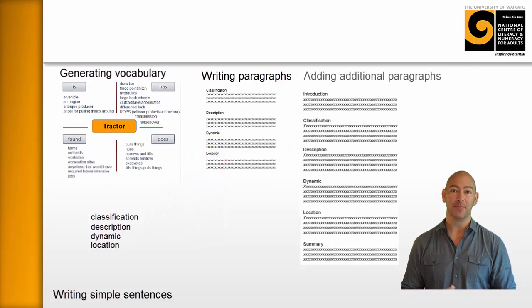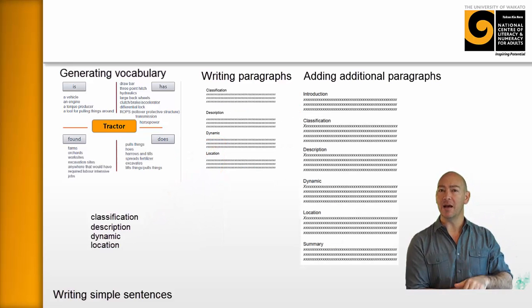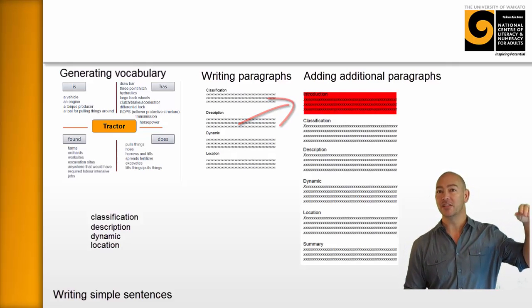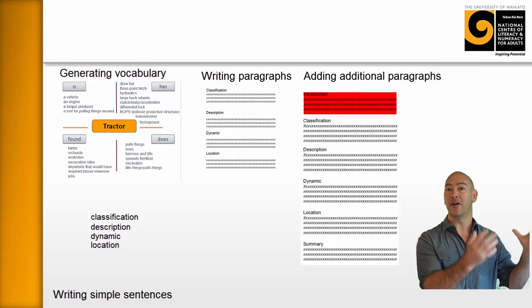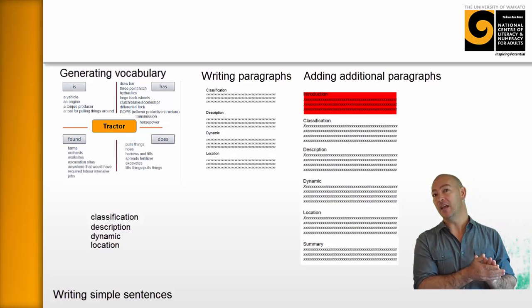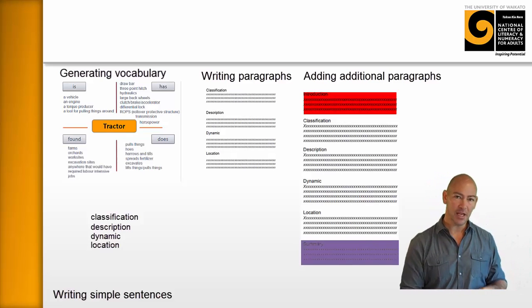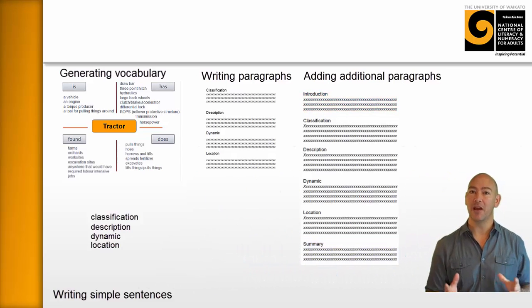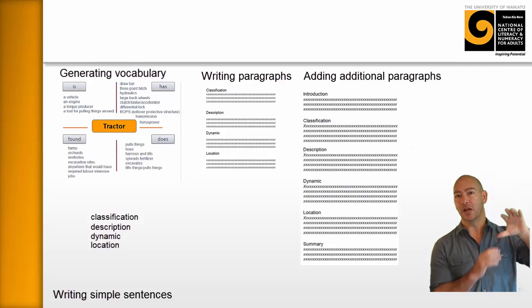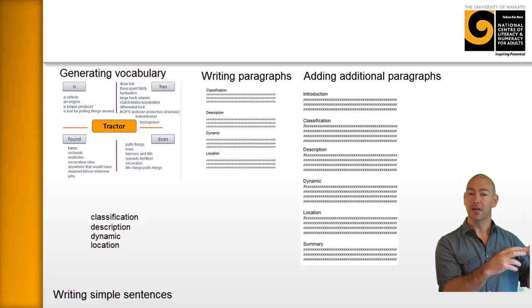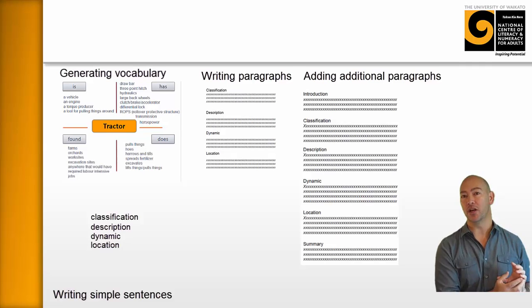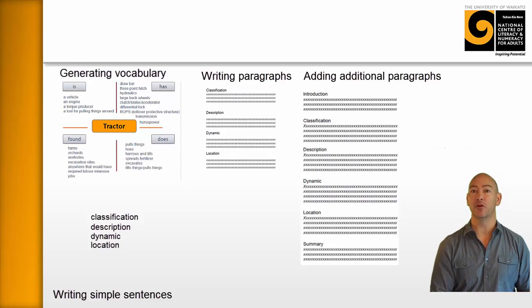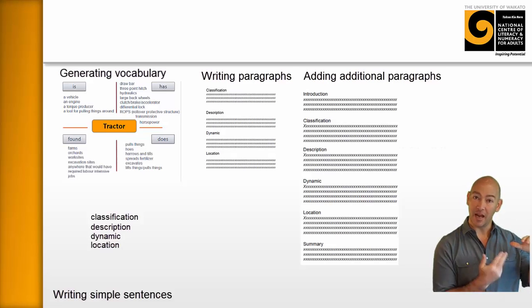which is pretty amazing for some of these learners, and they're feeling pretty good about this, is I get them to write an introduction. And the introduction is very simple. This is, this report is about tractors on farms or something simple, or it might be more elaborated and better than that. And then I like them to write a summary as well. And a summary just sums up the context of what's in that particular report. So in the end, they've got six paragraphs, an introduction, moving into a classification, and then a descriptive paragraph, a dynamic paragraph that describes what a tractor can do, a location paragraph describing where it is, where it's situated in its environment, and finally a summary. And in the end, those learners are really proud of the writing that they've done and continue to update it.